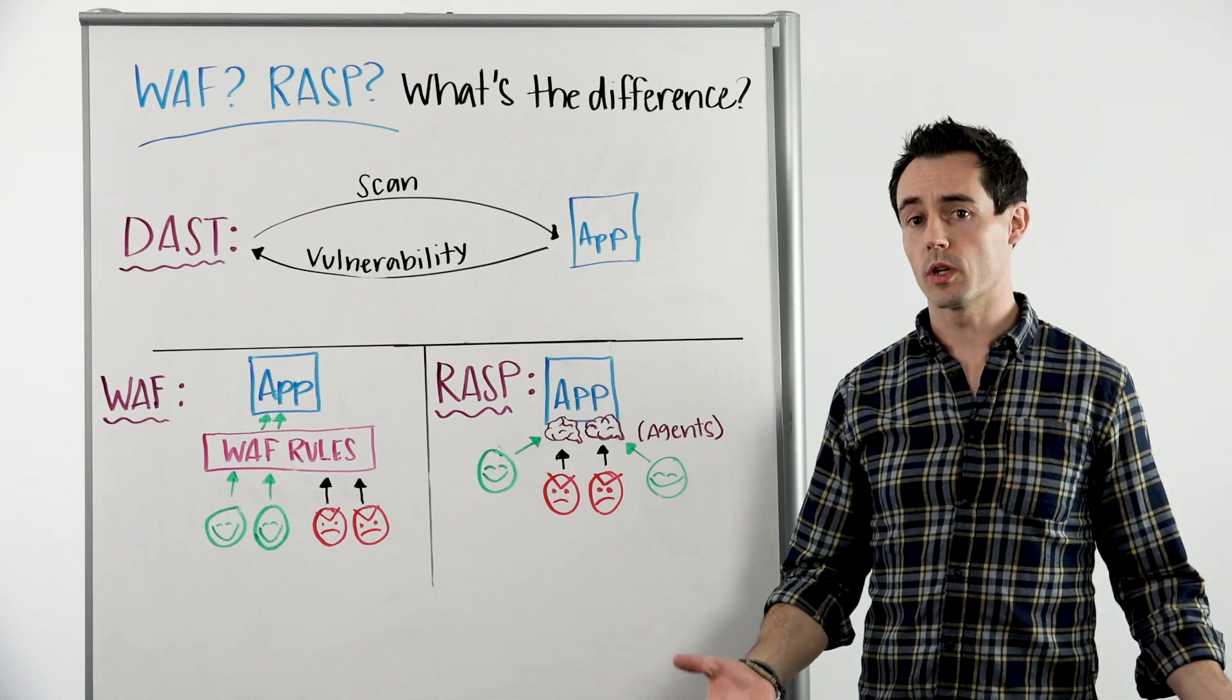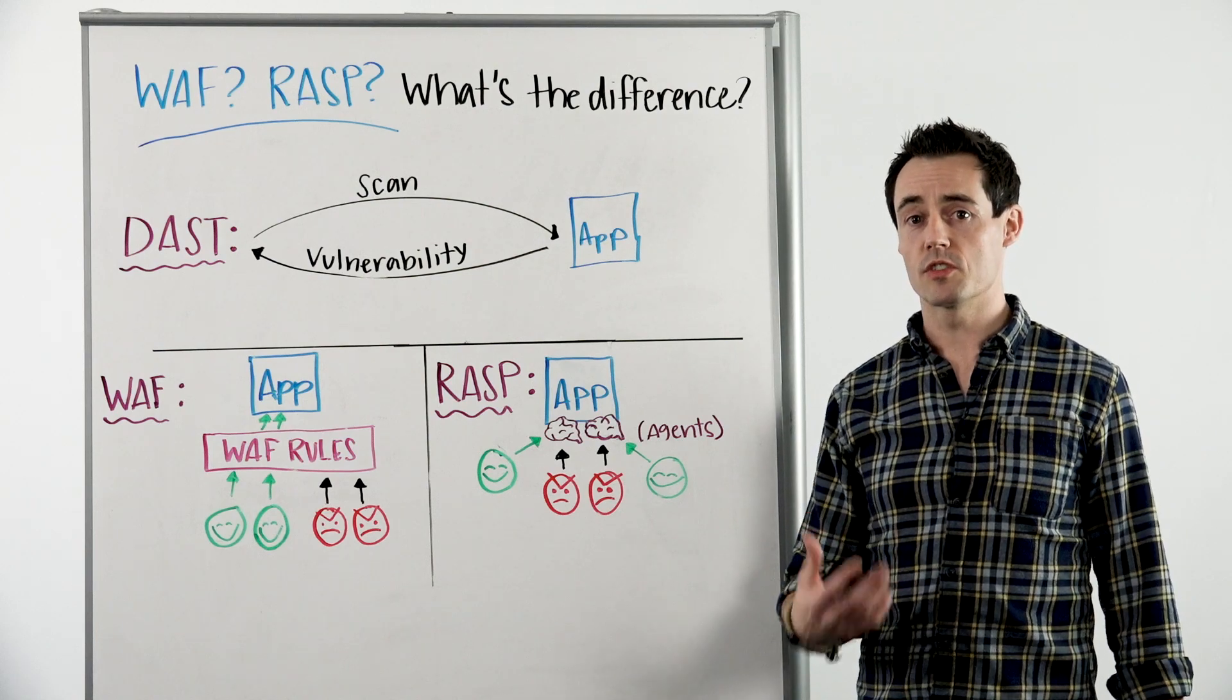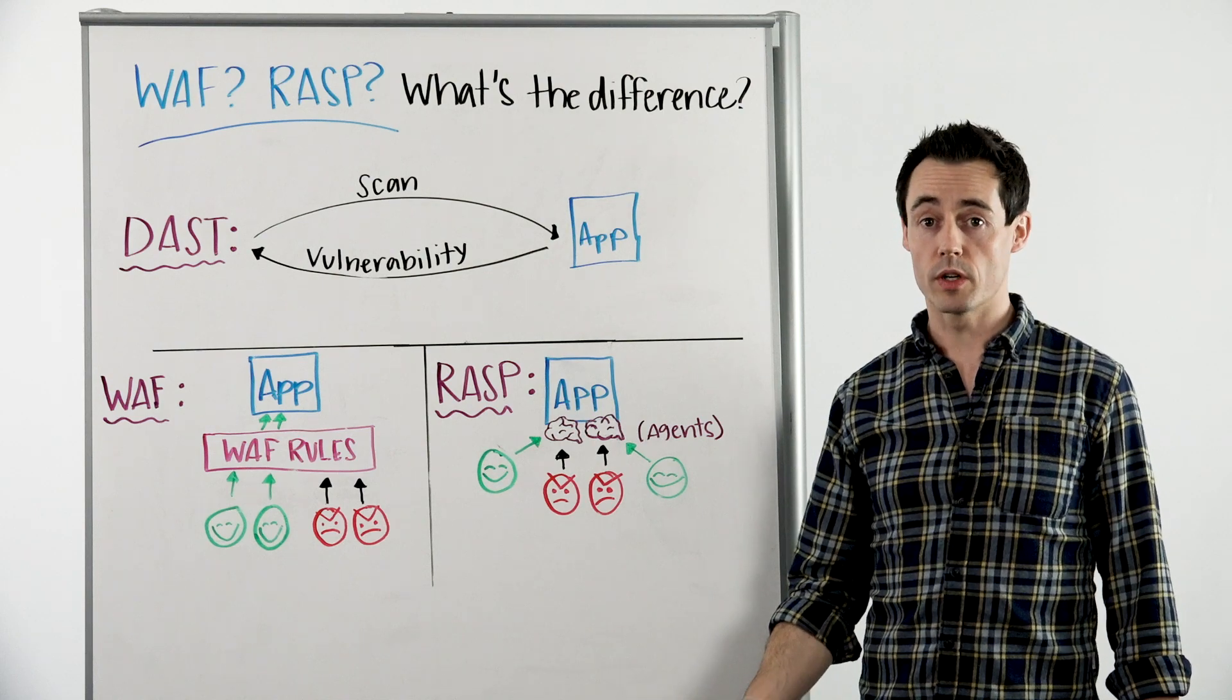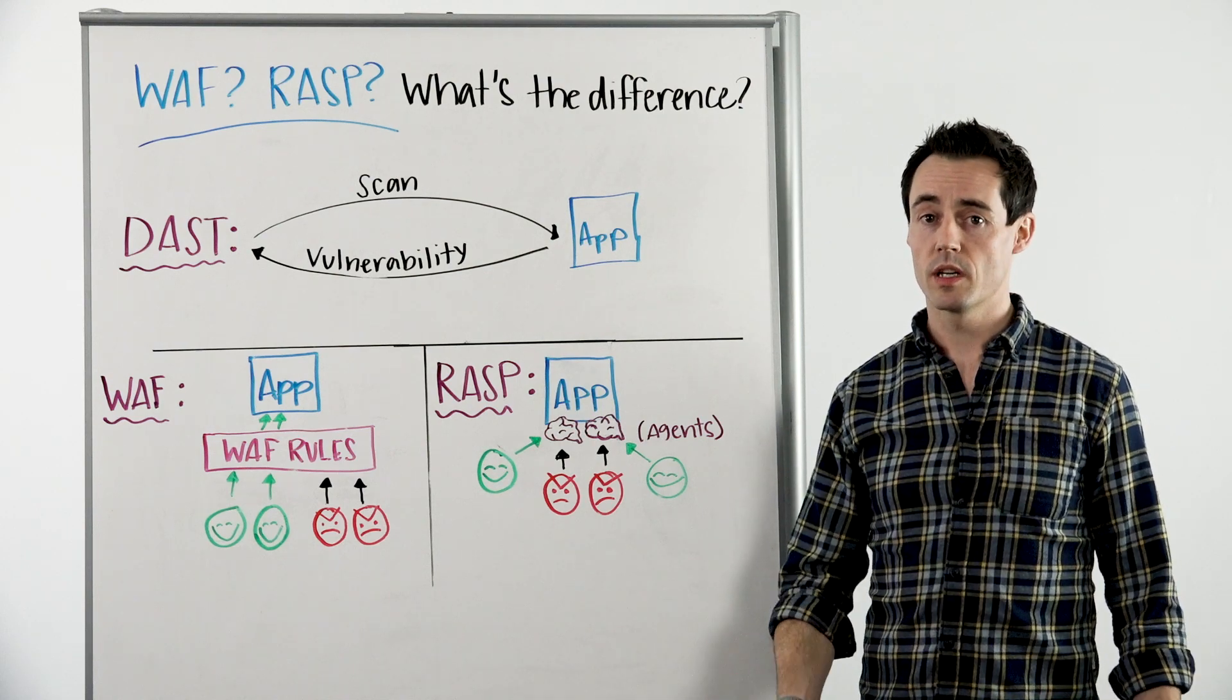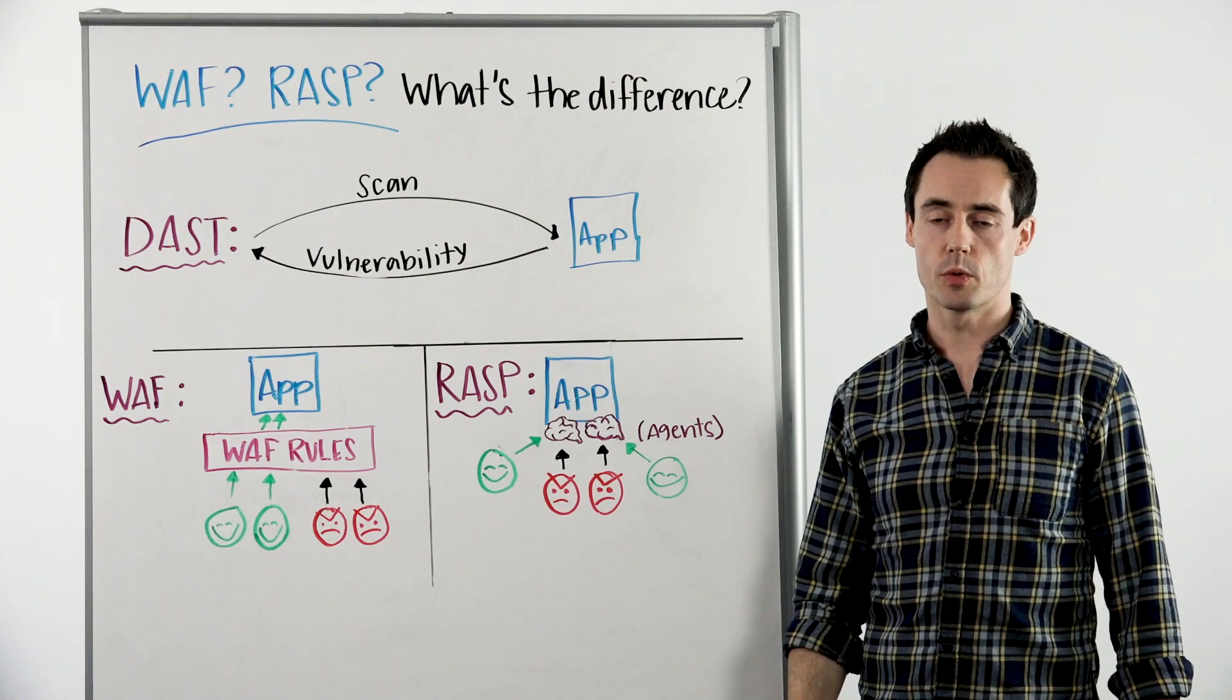Previously we have spoken about DAST, and just as a quick recap, that stands for dynamic application security testing, which navigates a running web application as a regular user would, discovering all of the available pages and elements and probing to discover vulnerabilities, albeit a bit faster than a user would.